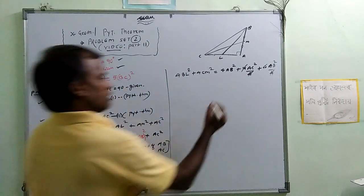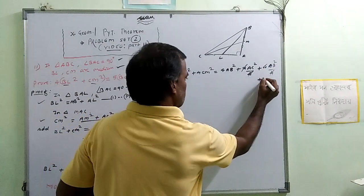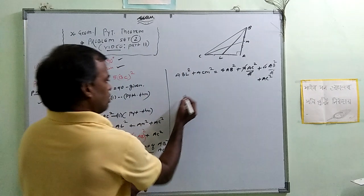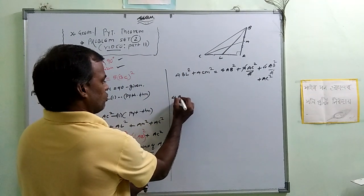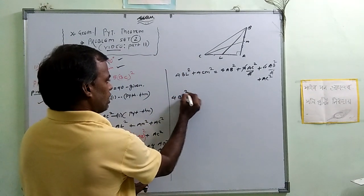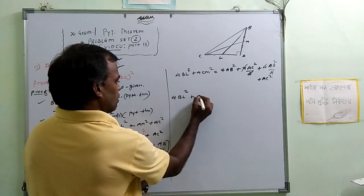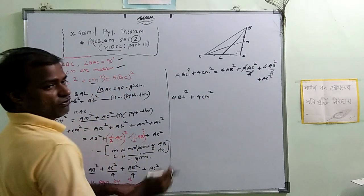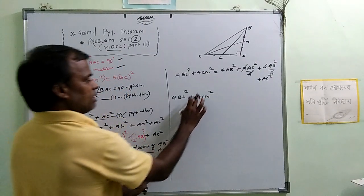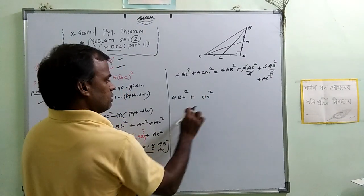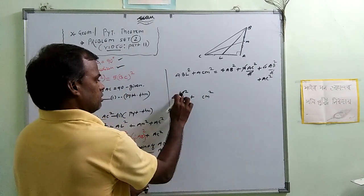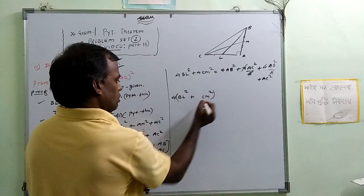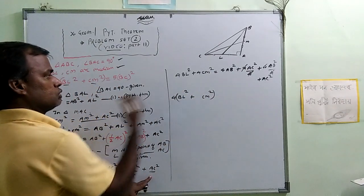On the right side, after multiplying by 4 and simplifying: 4BL² plus 4CM² equals 5AB² plus 5AC².